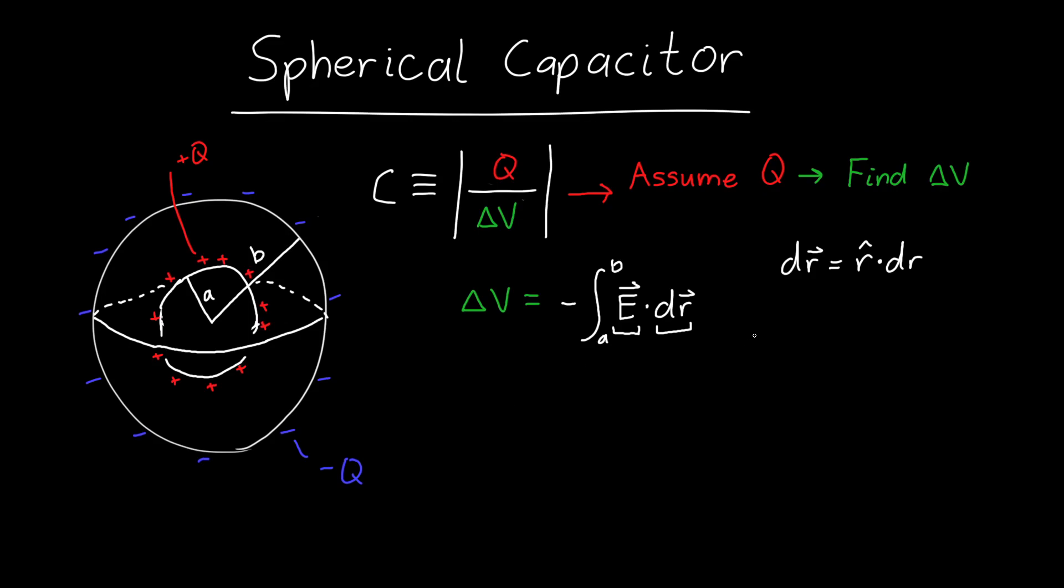What about the electric field? We have to be careful here because the electric field is due to the charge on both plates. So it's E inner plus E outer: the electric field due to the charge on the inside plus the electric field due to the charge on the outside.